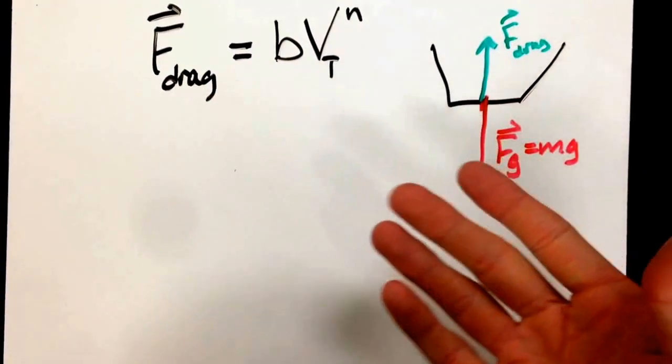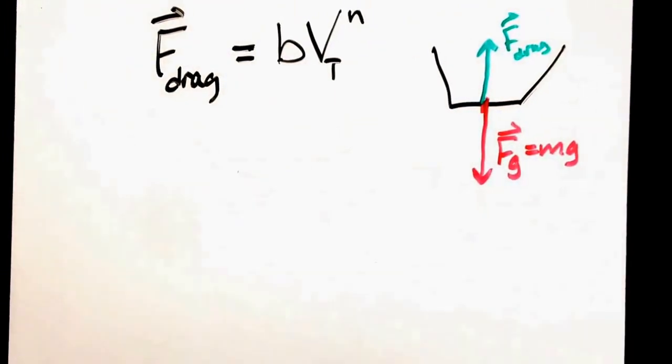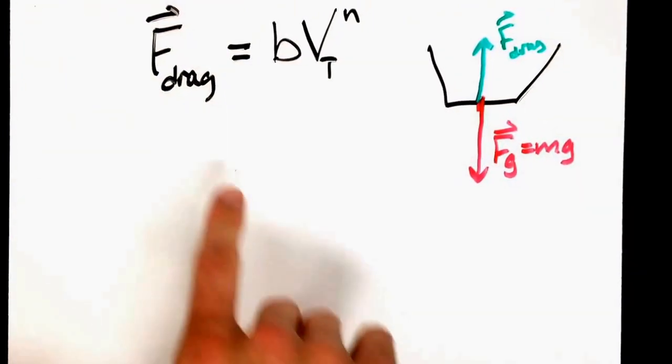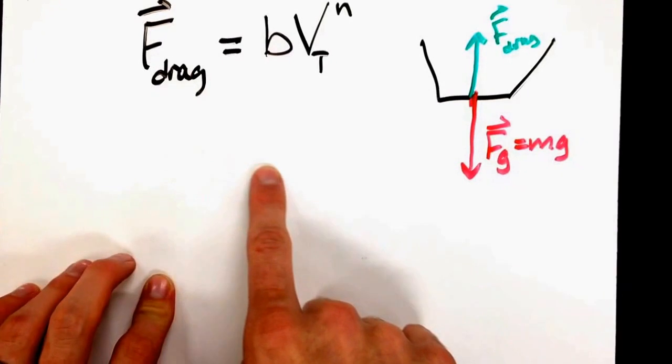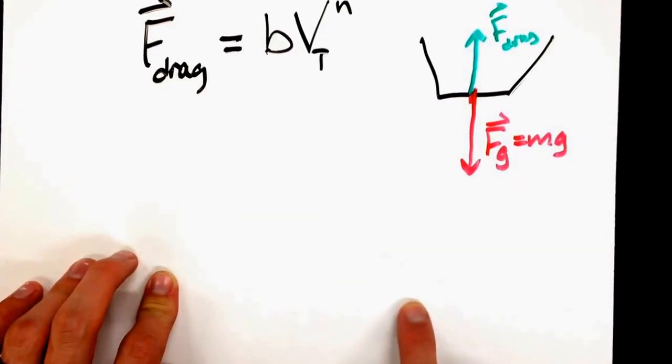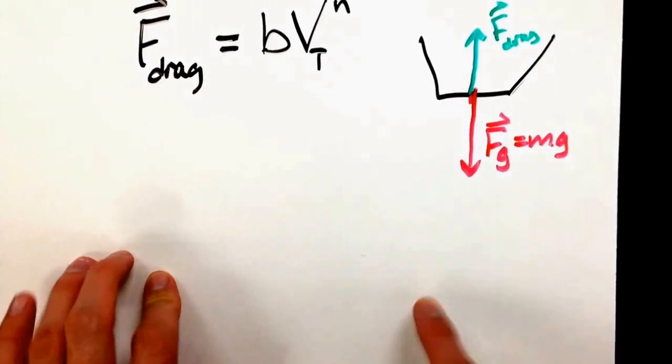At terminal velocity, the acceleration is zero. You should have gotten a graph that showed a little bit of acceleration, and then a constant linear position versus time.